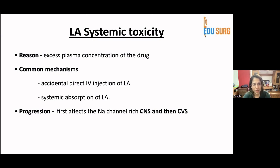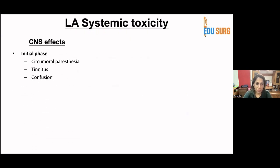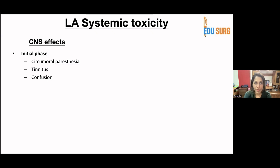Local anesthetic systemic toxicity occurs because of high concentration of the drug — either too much was given, or it was injected into a highly vascular area. The common mechanism is accidental intravenous injection or systemic absorption. It first affects sodium channels, more prominently in the CNS and then the CVS, so CNS effects are seen first. The first signs are always excitatory then depressive. The patient will initially report circumoral paresthesias, tinnitus, and confusion, though these signs may be missed if the patient is under anesthesia.